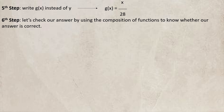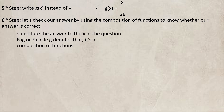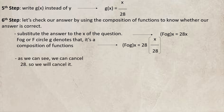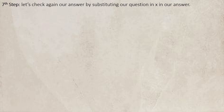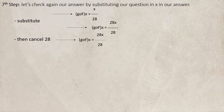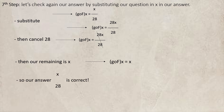Let's check our answer by using the composition of functions. Substitute the answer to the x of the question. f∘g(x) = 28 · (x/28) = 28x/28. We can cancel 28, so the remaining is only x, so our answer g(x) = x/28 is correct. Checking again: g∘f(x) = (28x)/28, then cancel 28. The remaining is x, so g∘f(x) = x. Our answer x/28 is correct.